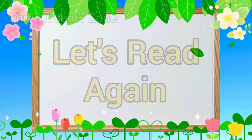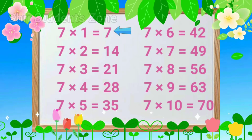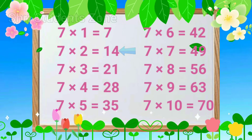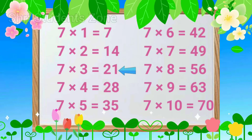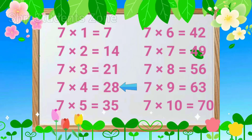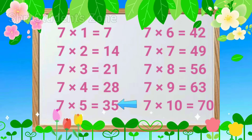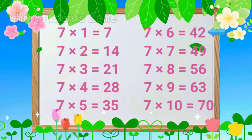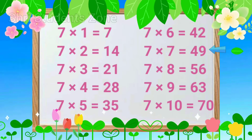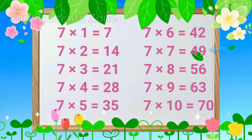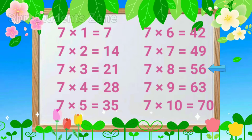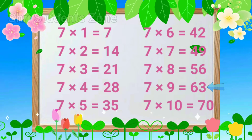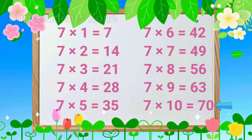Let's read again. 7 1s are 7, 7 2s are 14, 7 3s are 21, 7 4s are 28, 7 5s are 35, 7 6s are 42, 7 7s are 49, 7 8s are 56, 7 9s are 63, 7 10s are 70.